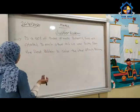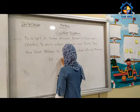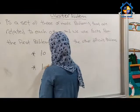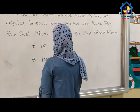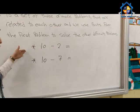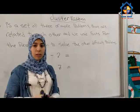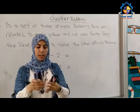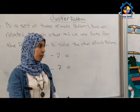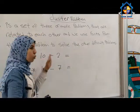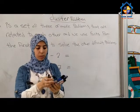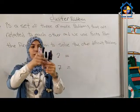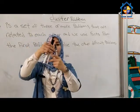Like this — if I have 10 minus 2 as the first problem, and the second problem is 10 minus 7. I will solve the first problem like this. Here I have 10 markers: 1, 2, 3, 4, 5, 6, 7, 8, 9, 10. If I want to subtract 2, or take away 2 from 10: 1, 2 — the remainder is 1, 2, 3, 4, 5, 6, 7, 8.